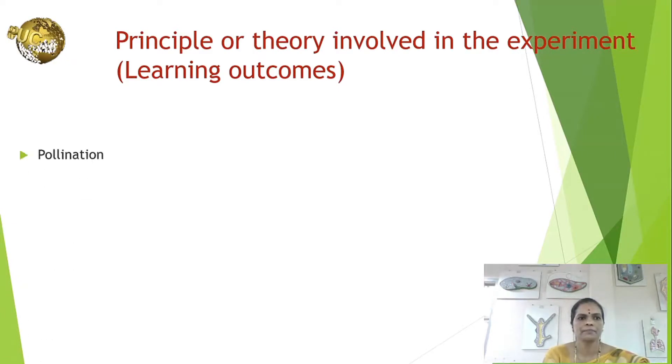The principle or theory involved in the experiment: Pollination is an important event in the life cycle of flowering plants. Pollination is the transference of pollen grains from the anther to the stigma of the same flower or different flower of the same species or of different species, mediated by abiotic and biotic factors.